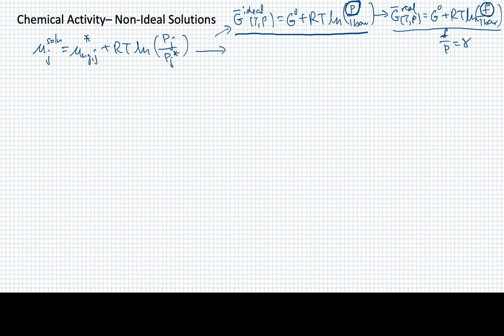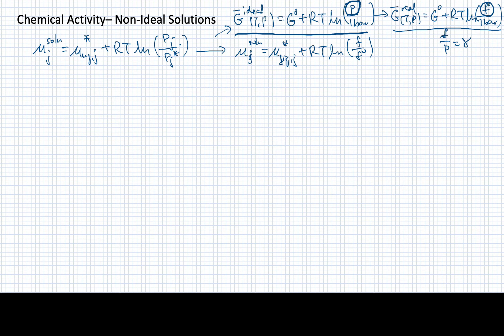One thing we could do — and this would only be true in a very extreme case — is that we might alter this expression to take into account when we have such a large vapor pressure that we might actually have a non-ideal gas in the vapor. That would look like the same expression, but in place of the pressure ratio, we would have the log of the fugacity over the reference fugacity. We won't find this expression to be necessarily very helpful, simply because most vapor pressures are fairly low.